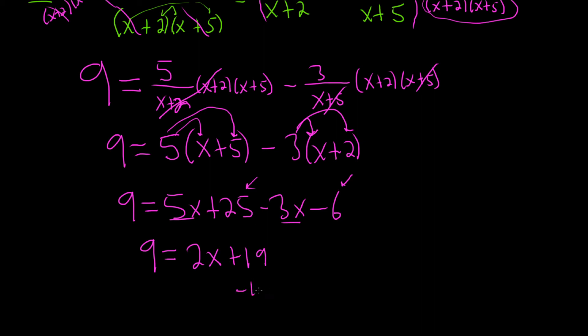And let's see. 25 minus 6 is 19. We can subtract 19 now. So minus 19, minus 19. That gives us negative 10. Right? 9 minus 19 is negative 10. And that's equal to 2x. We're almost there. The last thing to do now is divide by 2. Divide by 2. That gives us negative 5 equals x. Which is the same thing as x equals negative 5.